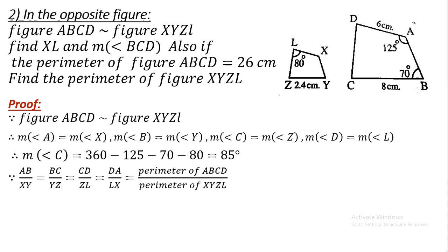Since the two figures are similar, the corresponding sides are proportional: AB/XY = BC/ZL = AD/LX = perimeter of ABCD / perimeter of XYZL. We substitute the known values to find the missing lengths and the perimeter of XYZL.